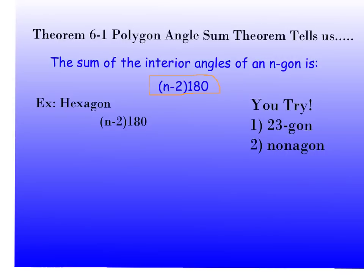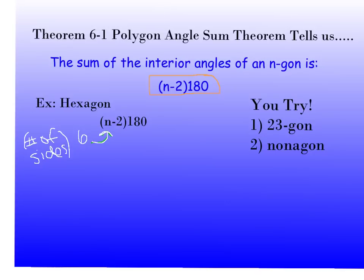If I'm asked to find the sum of the interior angles of a hexagon, I'm going to use my formula and plug in n. A hexagon has 6 sides, so n equals 6. I plug in 6 into the formula: 6 minus 2 times 180, which is 4 times 180. Using my calculator, 4 times 180 gives me 720. So I know that inside a hexagon, all of my angles will add up to 720 degrees.